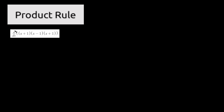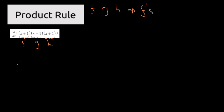For the last example, we need to recognize that we have three terms — f, g, and h. The product rule extended to three terms means that if we differentiate f·g·h, it becomes f prime·g·h plus f·g prime·h plus f·g·h prime.